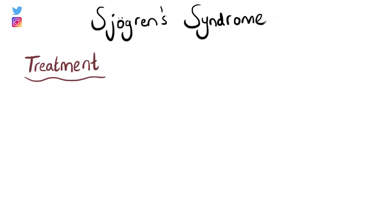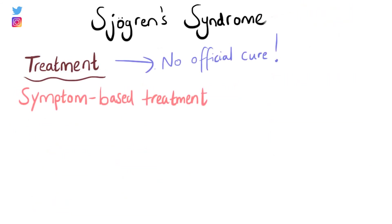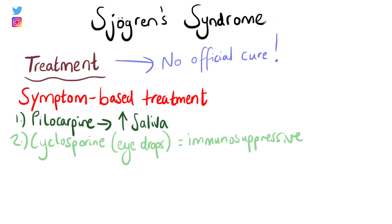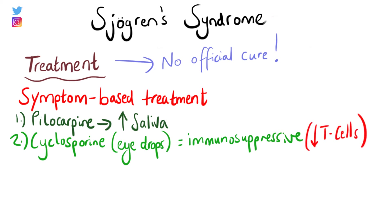There is no official cure for Sjogren's syndrome, so treatment involves managing the symptoms. Medications like pilocarpine can increase saliva production. Eye drops containing cyclosporine, which is an immunosuppressant, can be given for dry eyes. Cyclosporine works by reducing the levels of T lymphocytes.